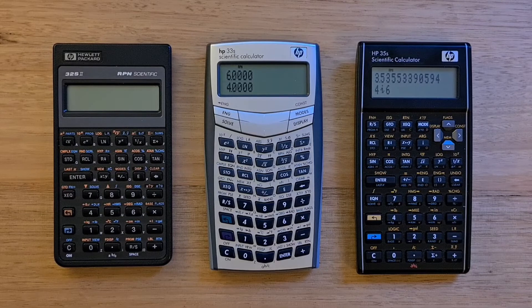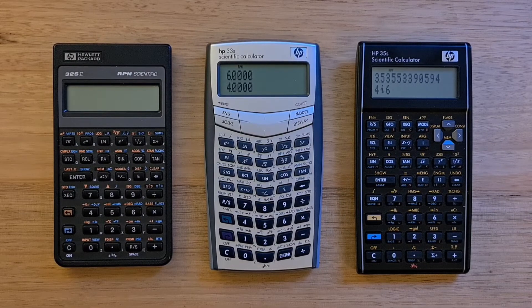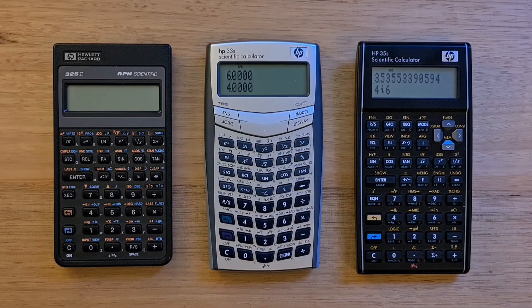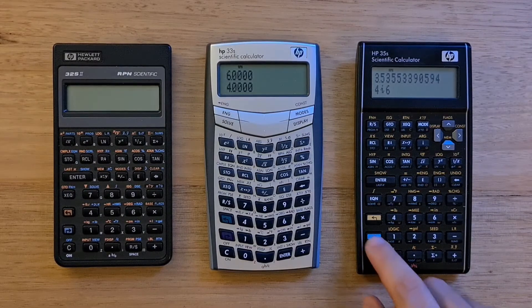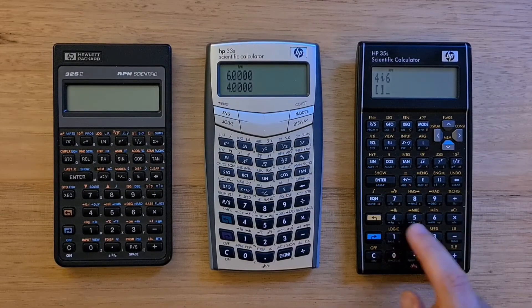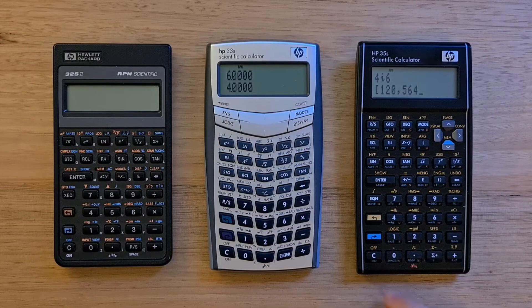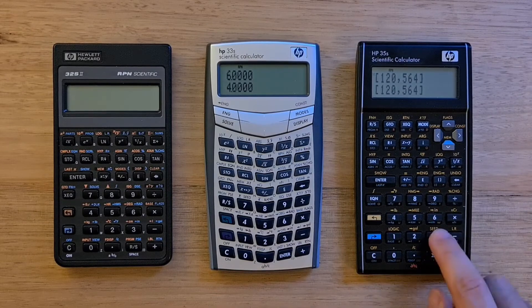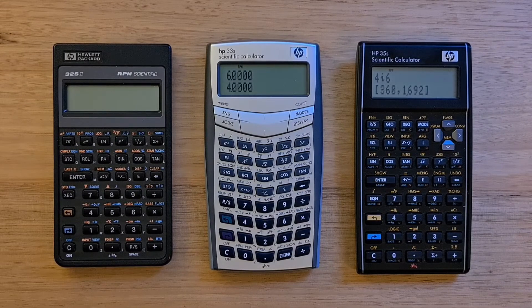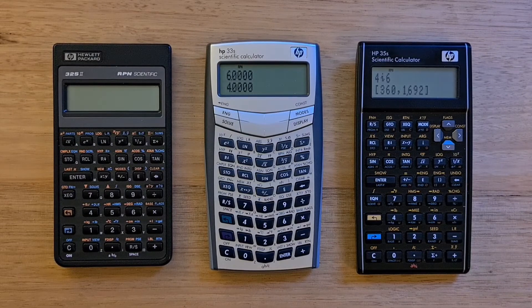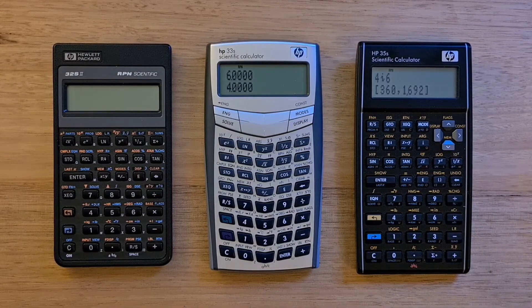The complex number support on the 35S does have a lot of quirks that I covered in a separate review video. The 35S also supported vector operations. Vectors are entered using the square brackets key. This is quite easy to use. But none of these calculators support general matrix operations.